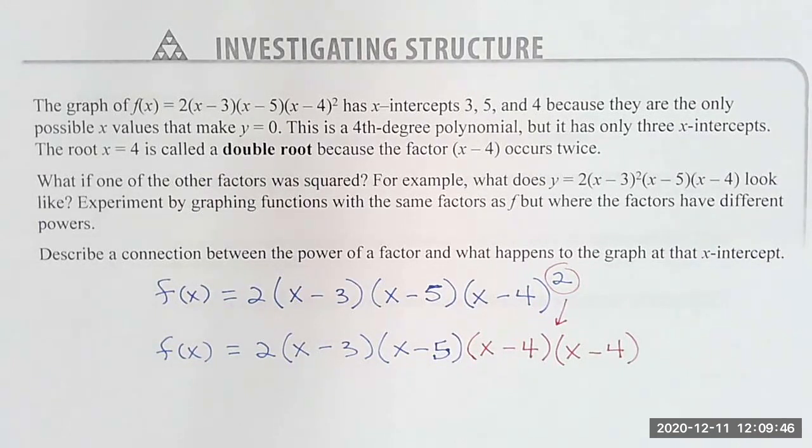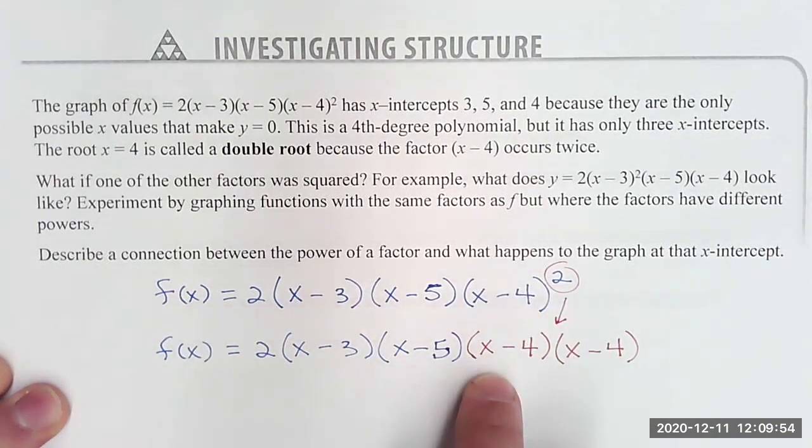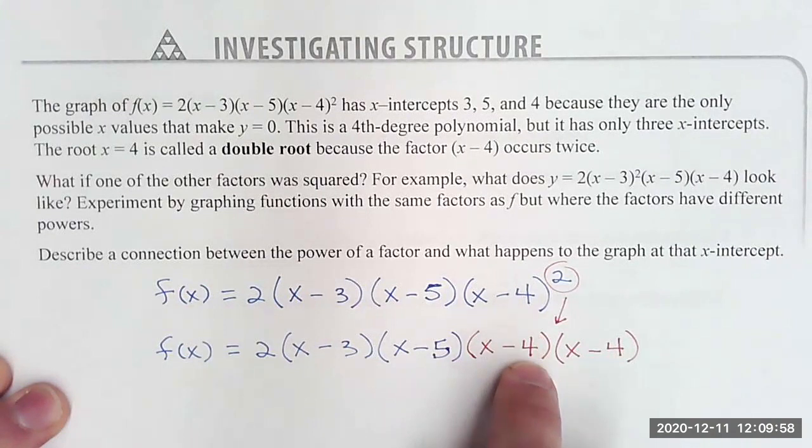It's a degree 4 polynomial as it's written, and you can see at the bottom this power of 2 indicates that this root of 4, or these factors, show up twice.